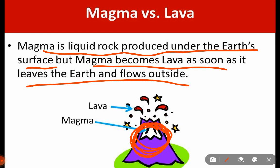But once it comes out like this, it becomes lava. I hope this clarified your concept. The similarity is that both magma and lava consist of liquid rocks.